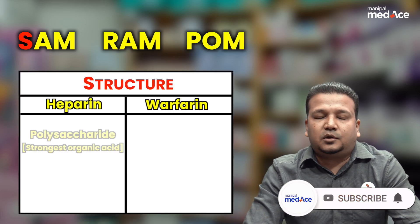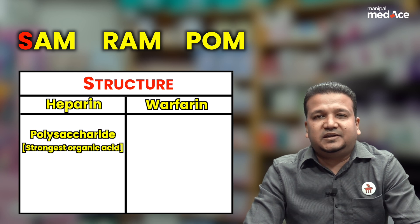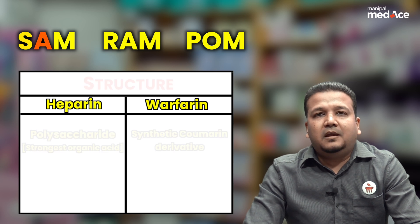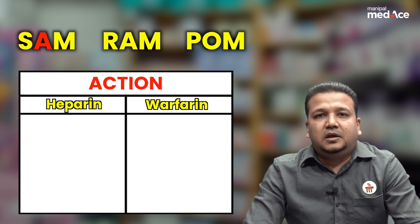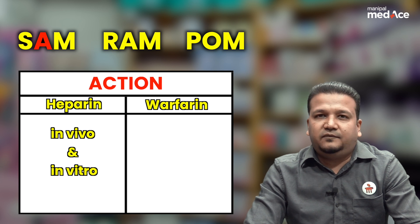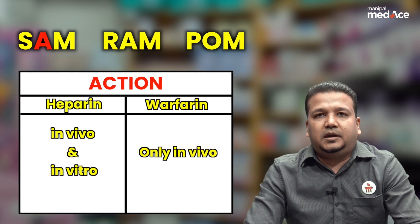Heparin is a heteropolysaccharide — it is the strongest organic acid in our body — whereas warfarin is a synthetic coumarin derivative. A stands for action. Heparin can act both in vivo as well as in vitro as an anticoagulant, whereas warfarin acts in the liver, so it is only an in vivo anticoagulant.